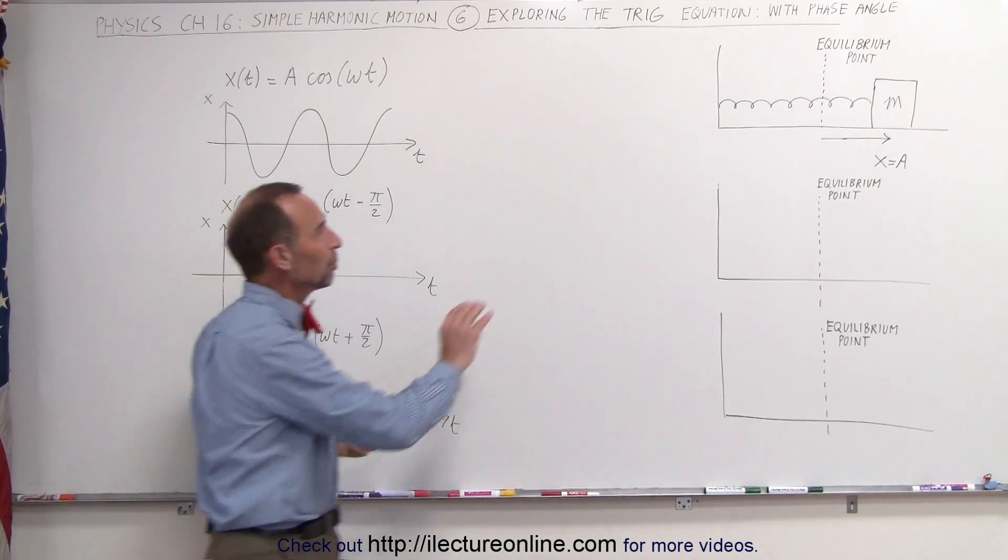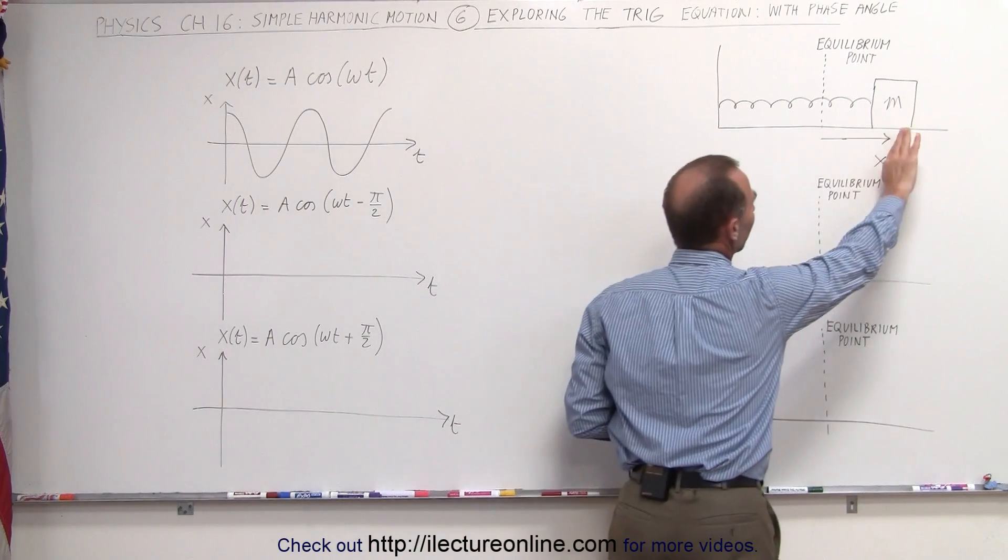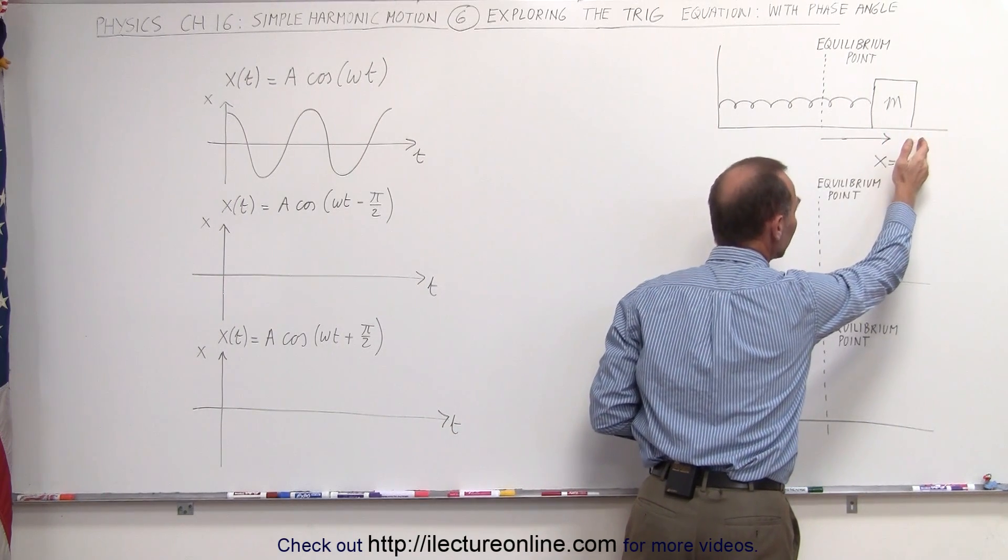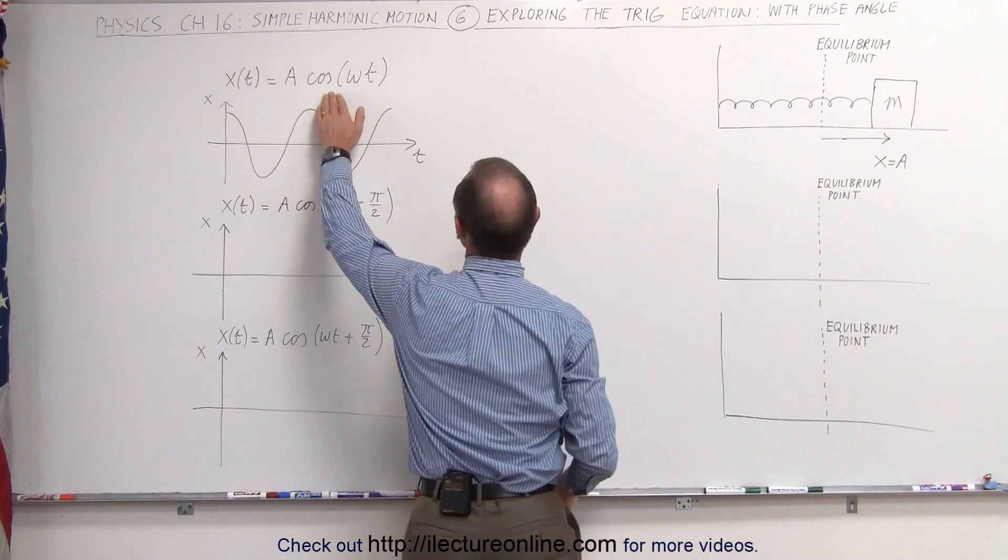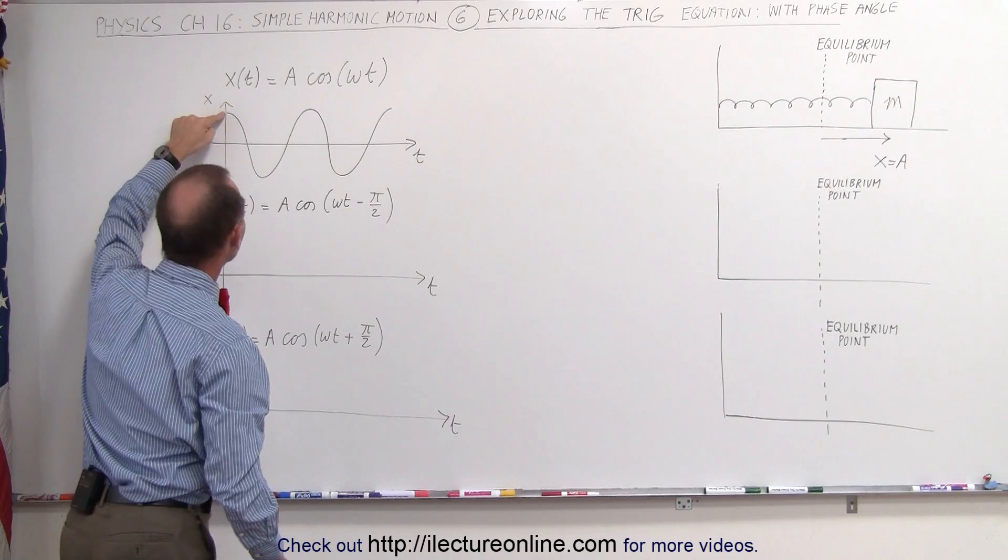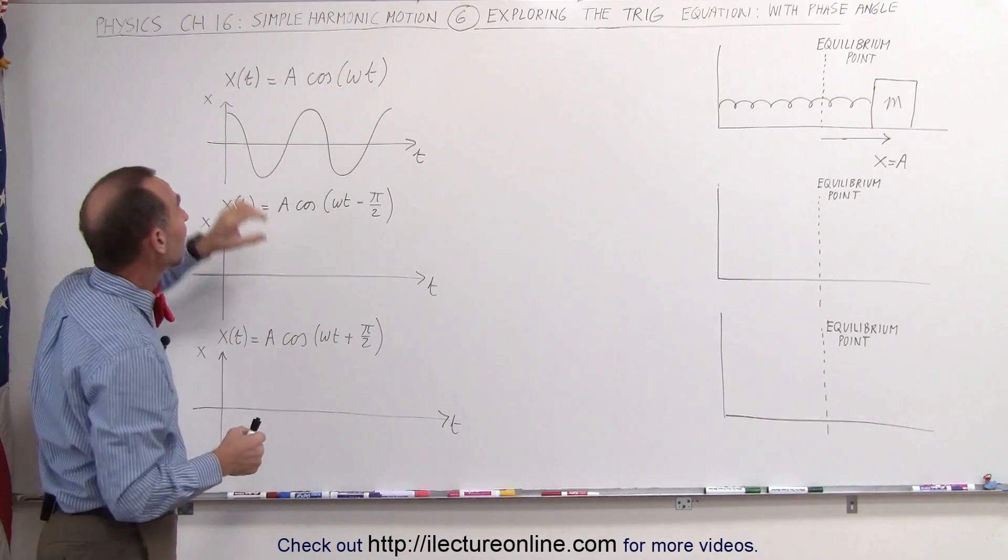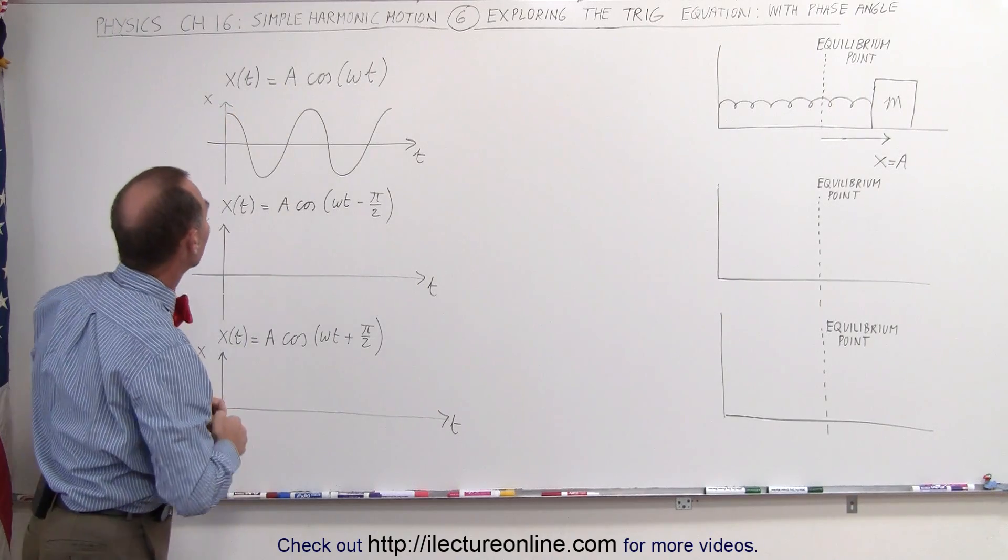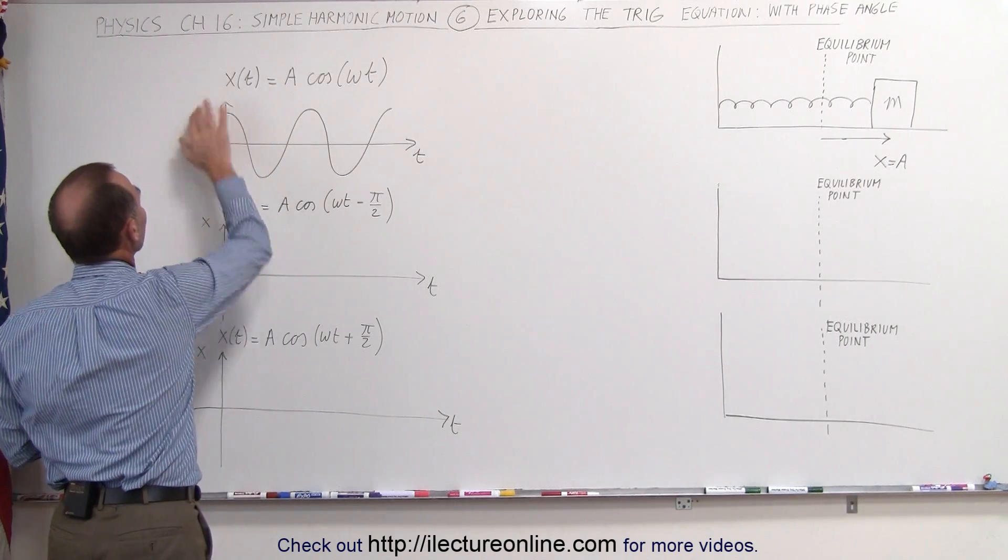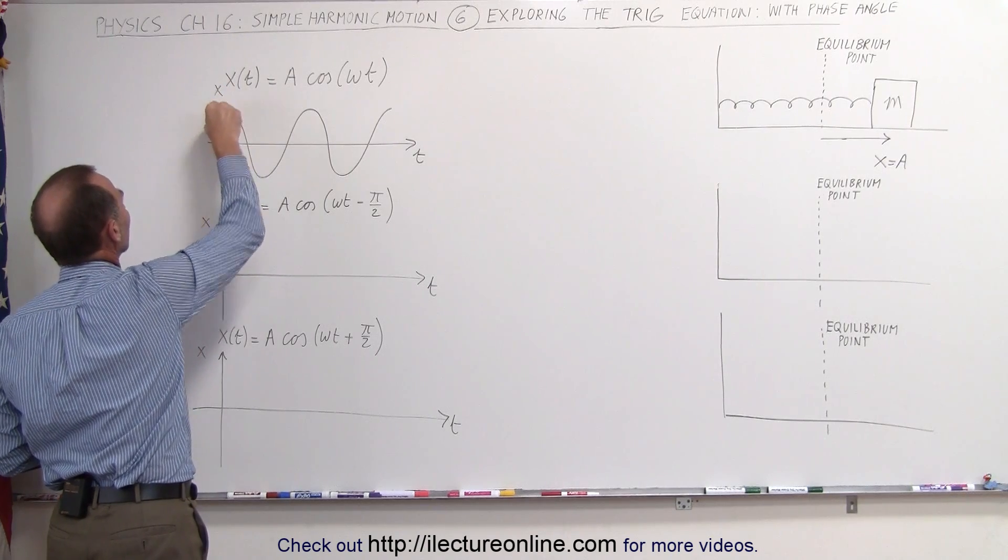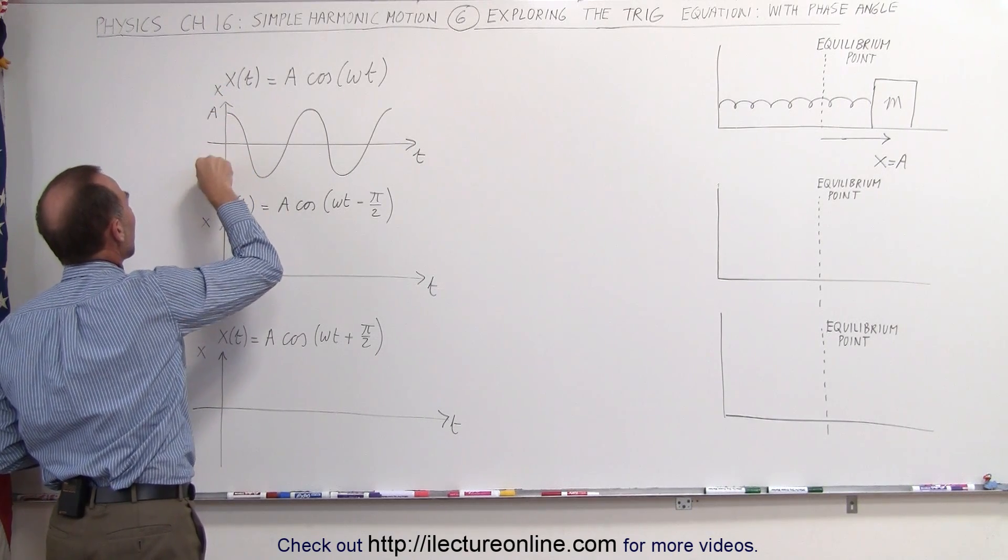Notice that in the case where we pull the block out to its maximum displacement away from the equilibrium point in the positive direction, that is defined by this equation right here. Notice that the cosine equation starts at x equals 1, or I should say the cosine of the angle equals 1, because then this is multiplied times a. So this is the x-axis, but the displacement here is positive a, and here would be minus a.